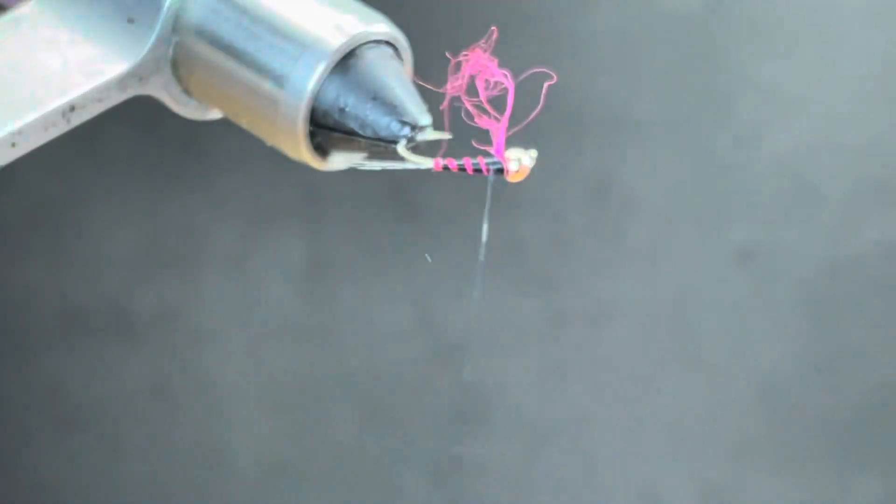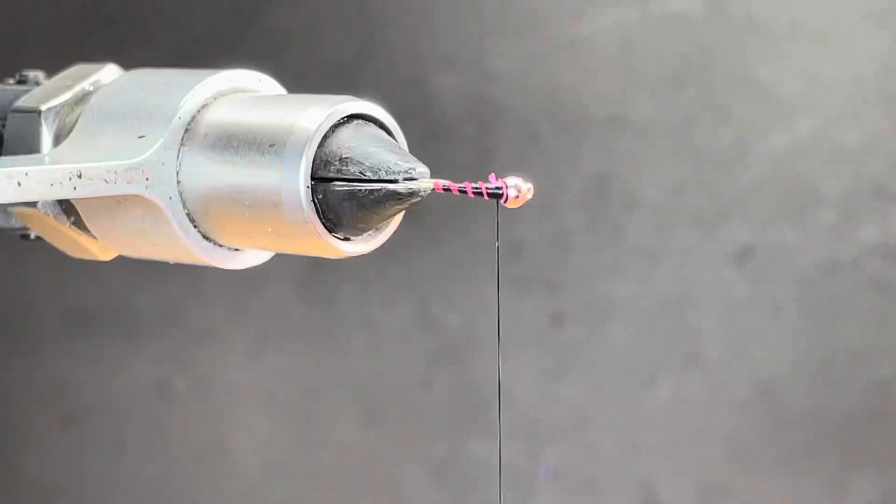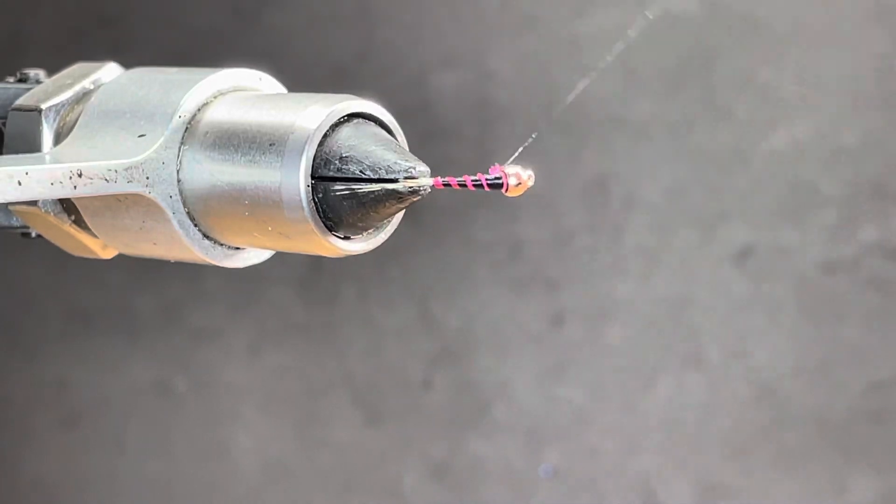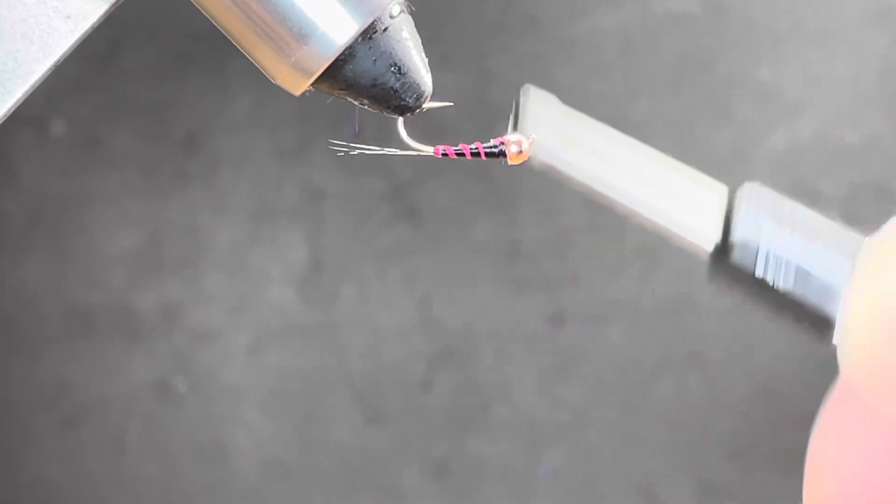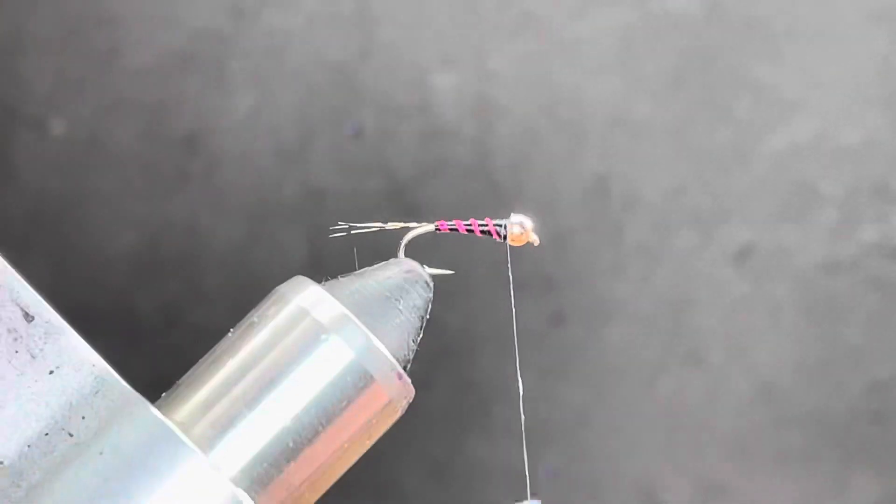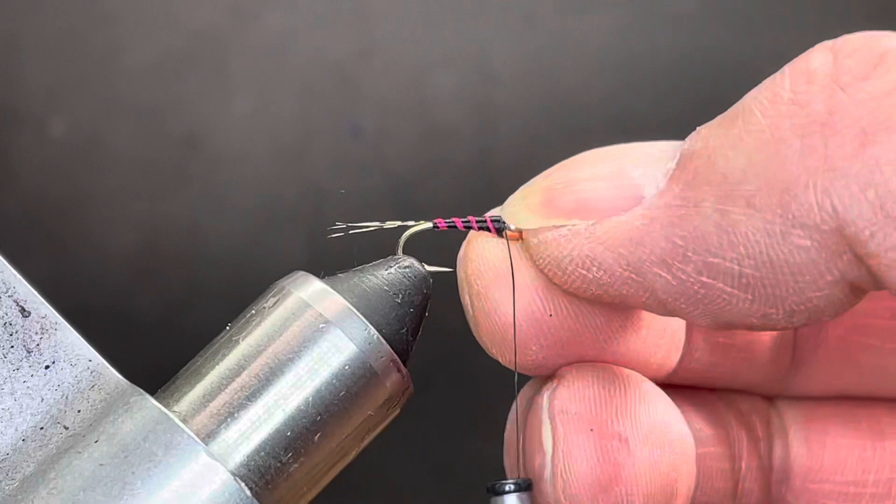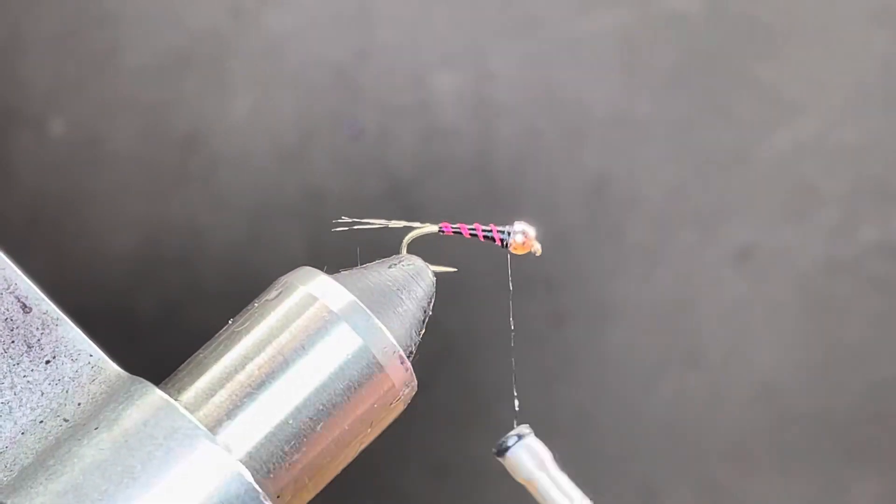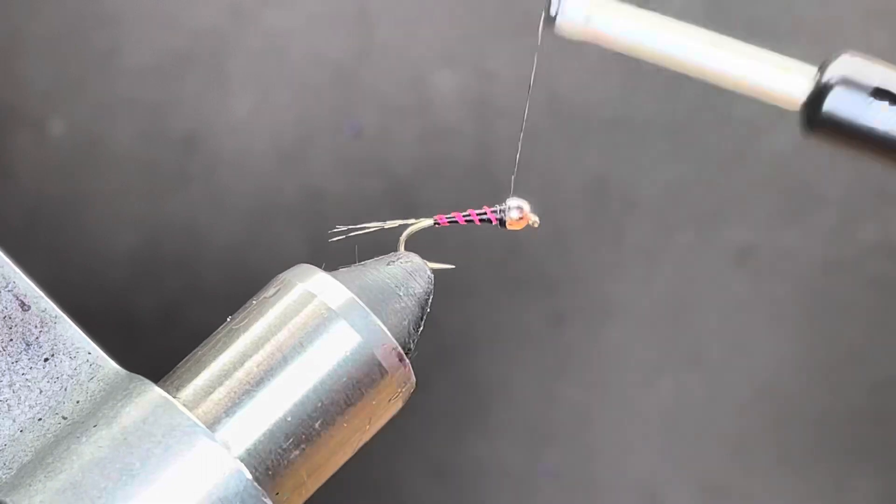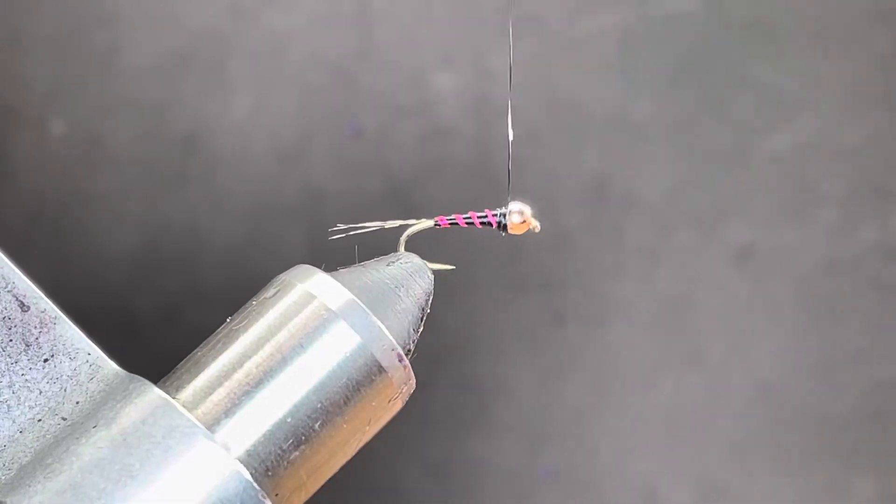I glued that thread shut. It didn't want to pop. That's all right. As long as we have it tied down. You don't have to be super precise on all this. These are meant to be super fast and pretty durable. Get them down and fish them.